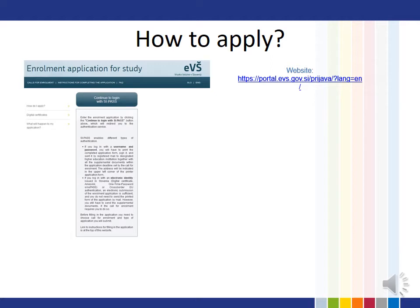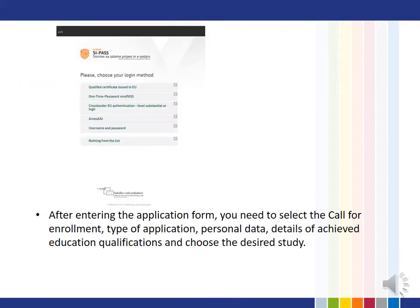You need to apply for the study via the Evše web portal, where you enter the application for enrollment by clicking on the 'Continue to log in with CPAS' button. You are first redirected to the online registration and e-signature service. You can use several authentication methods within CPAS — you can proceed to the login with one of the electronic identities or with a username and password. After entering the application, you need to select the call for enrollment.